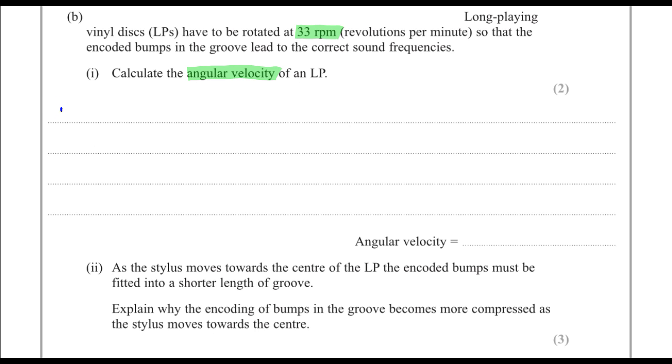We can start by writing omega, the angular velocity, is the angle covered in time. So in one minute, which is 60 seconds, we have got 33 revolutions.